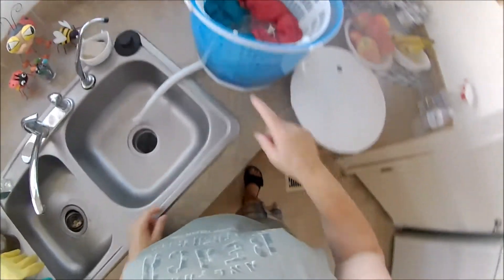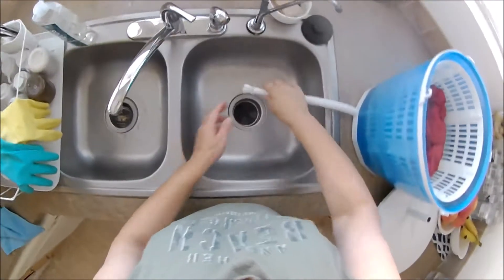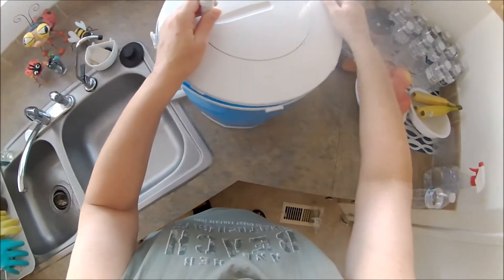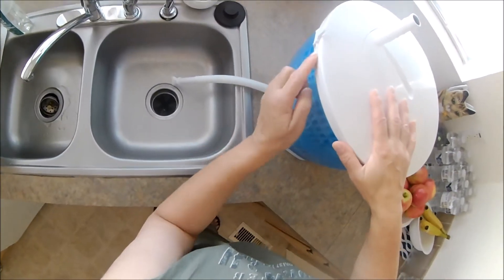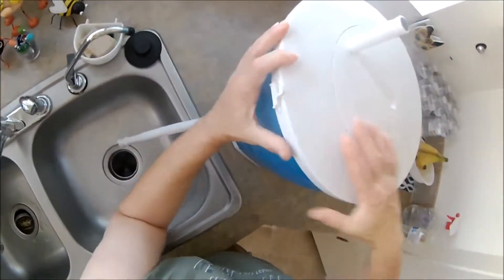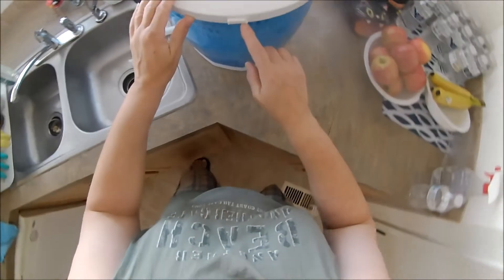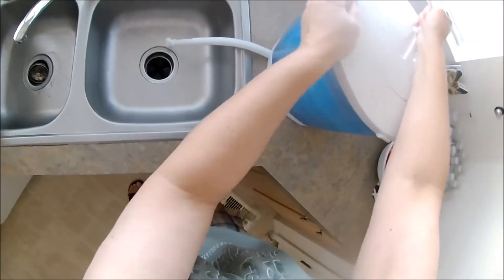So I filled up the tub with water halfway, see, and I made sure I plugged it in. Now we're going to close the lid. Make sure it goes all the way in here, like that, see. And now we're going to start spinning it so we can soak it up and get all the soap off of it.